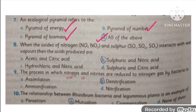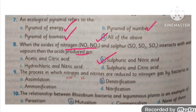MCQ number eight: when the oxides of nitrogen and sulfur interact with water vapor, the acids produced are sulfuric acid and nitric acid.